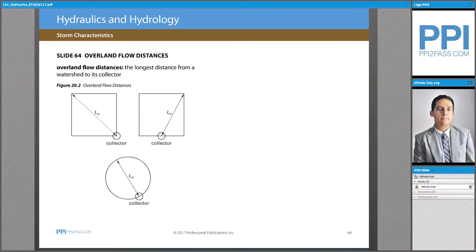Overland flow distances are the longest distance from a watershed to its collector. The overland flow distance is used to calculate the time of concentration of a given watershed.